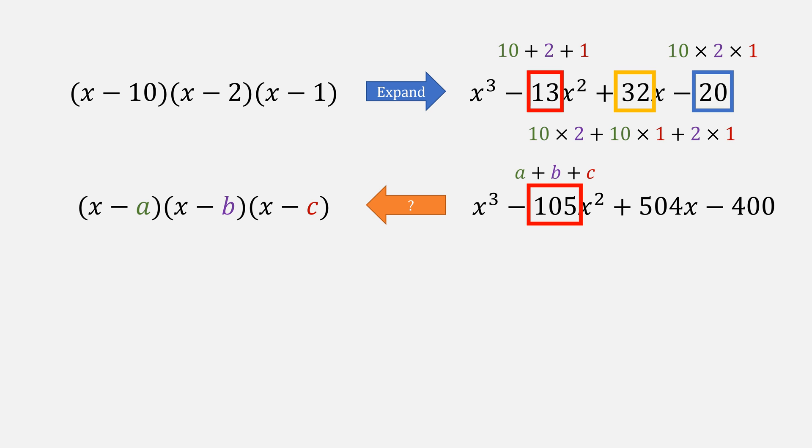Knowing what we know about coefficients, 105 is a + b + c. 504 is every pair multiplied together and then added. And 400, every root multiplied together. You might be able to figure out what these are. That's right, 100, 4, and 1.